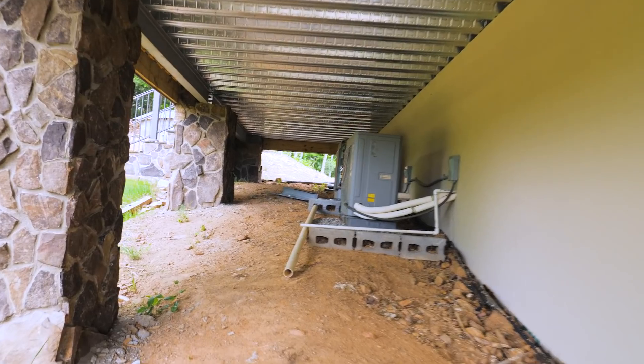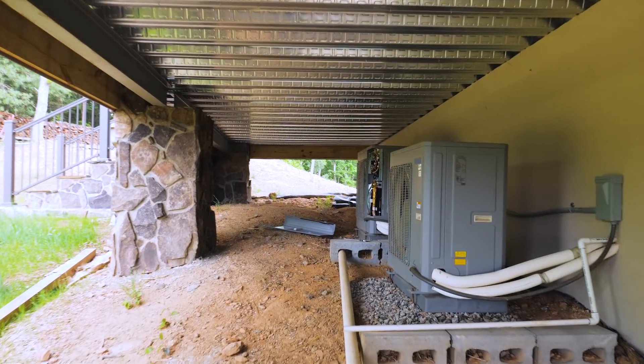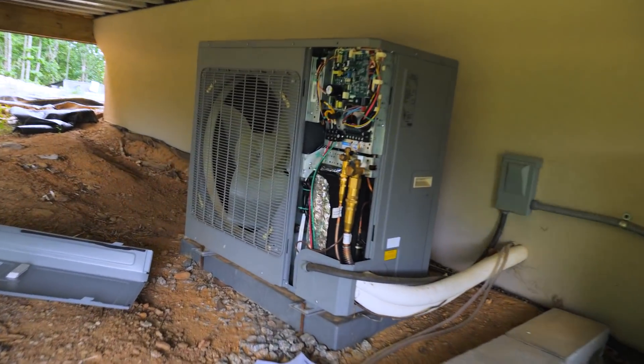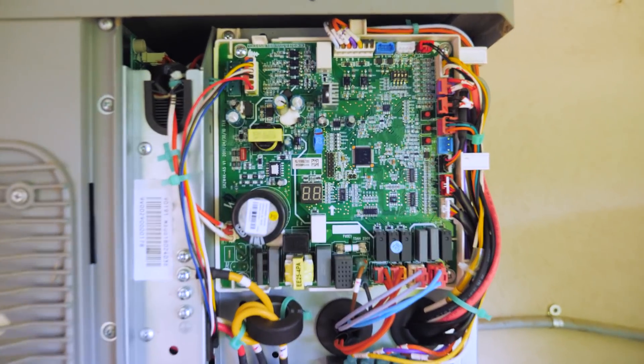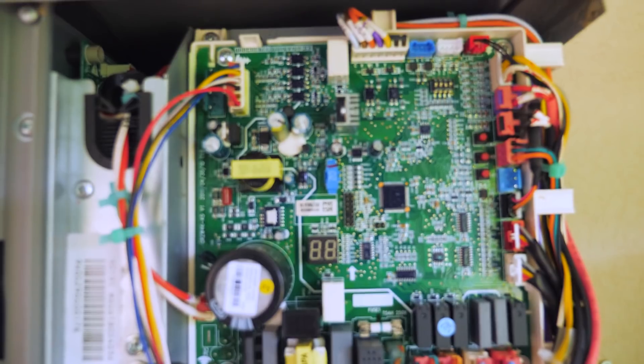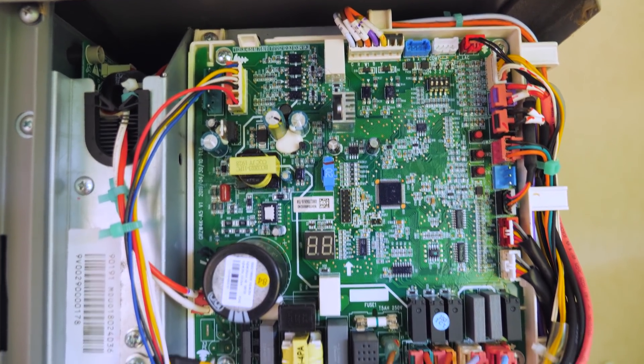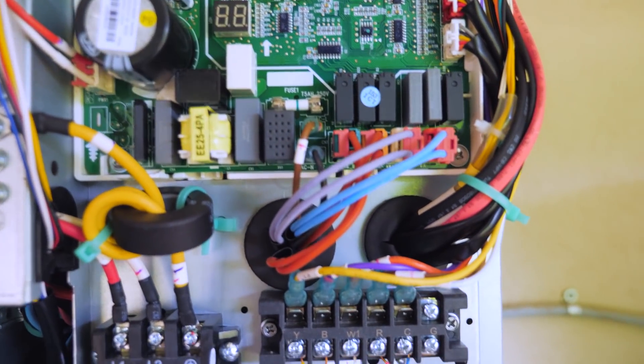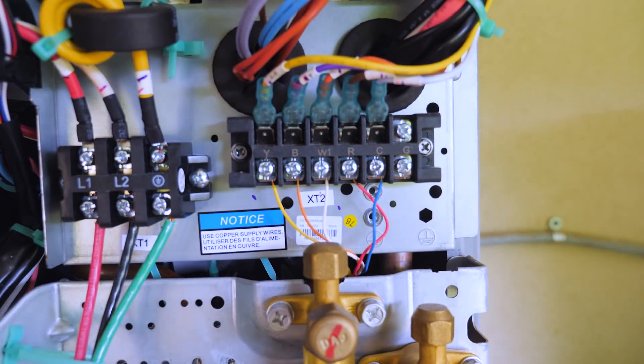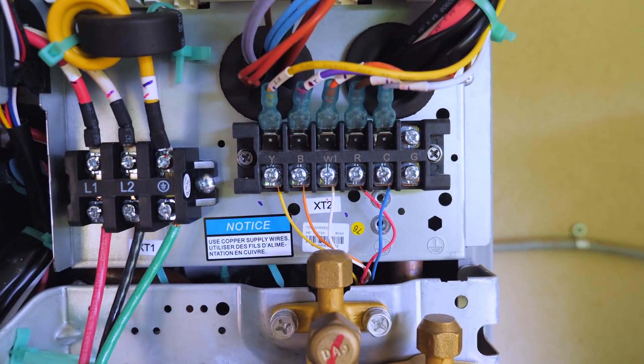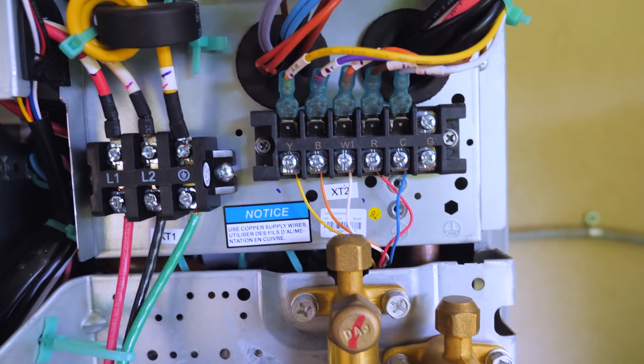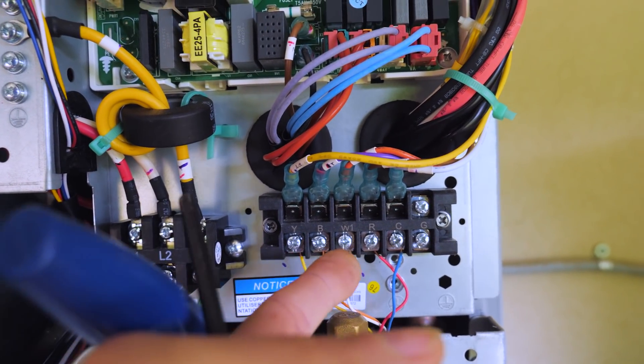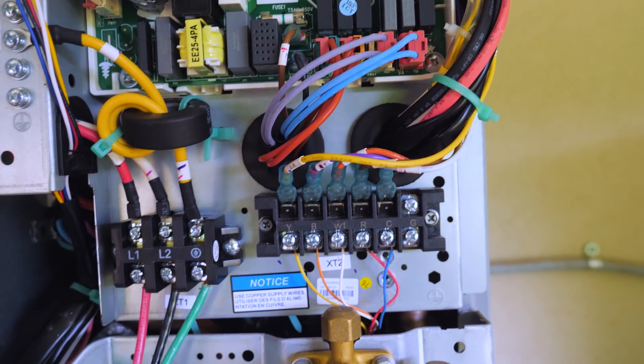So here we are under the back porch. These are the Mr. Cool outdoor units. Alright, I got the cover off and here's the control board. Not much you really need to do with this.